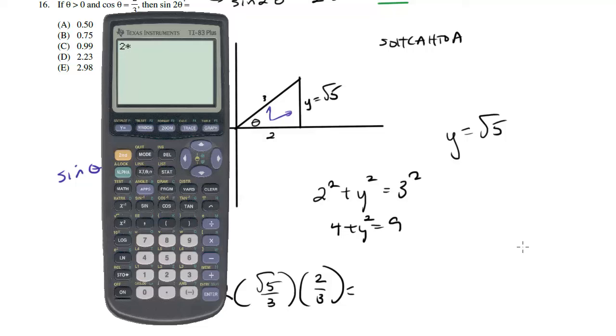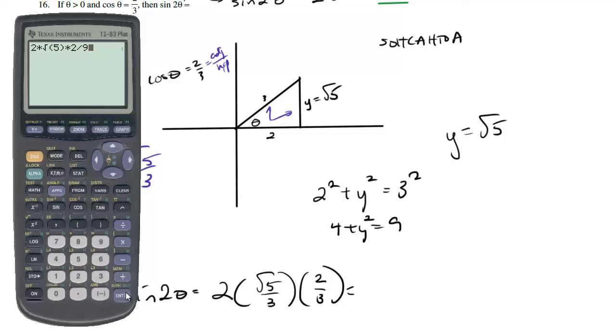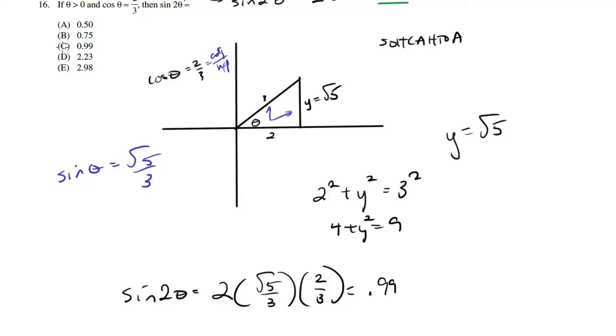And now we'll get out our calculator and figure this out. So it's two times square root of five times two divided by three, divided by three, so divided by nine once you put that all together. So we do all this work, and we finally get 0.99, which is choice C.